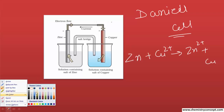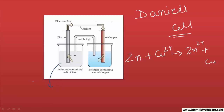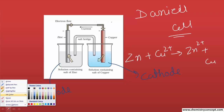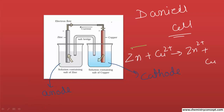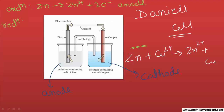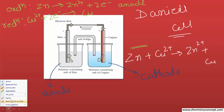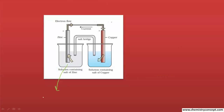We have two chambers — one is the anode and the other is the cathode. Since this is a redox reaction, there are two half-reactions. The oxidation half-reaction is zinc being converted into Zn²⁺, releasing two electrons, and this takes place at the anode. The reduction half-reaction is Cu²⁺ taking those two electrons and being converted into copper, taking place at the cathode.